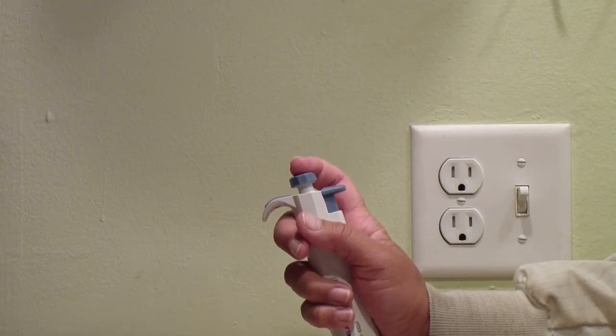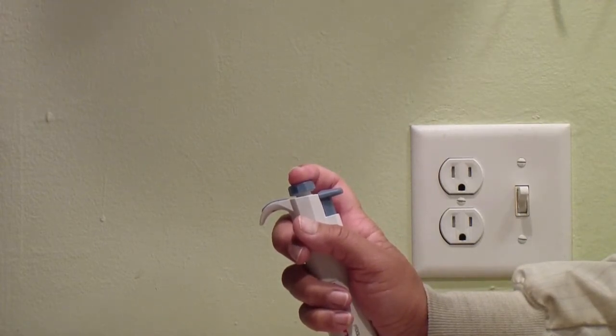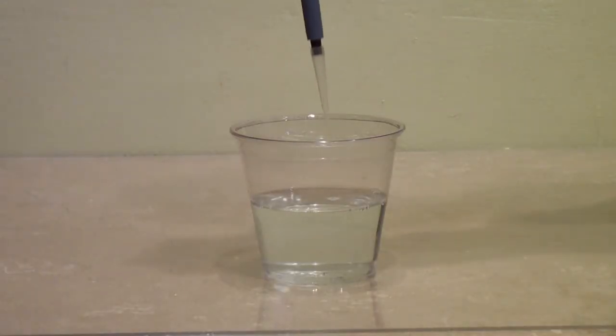So, hold the pipette in the air, press the plunger down to the first stop and hold it there, and then place the end of the tip in the liquid.